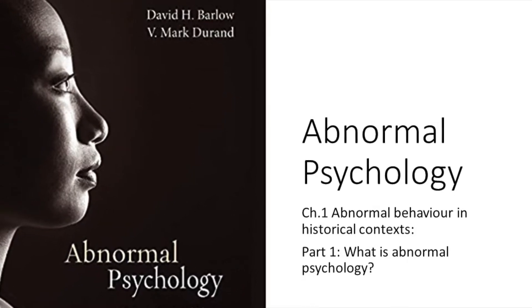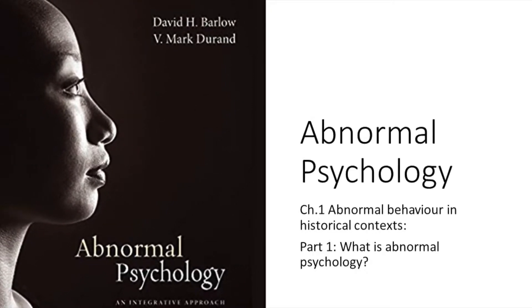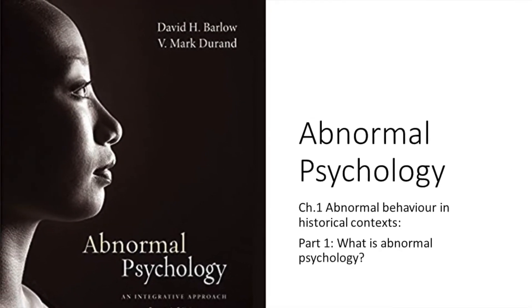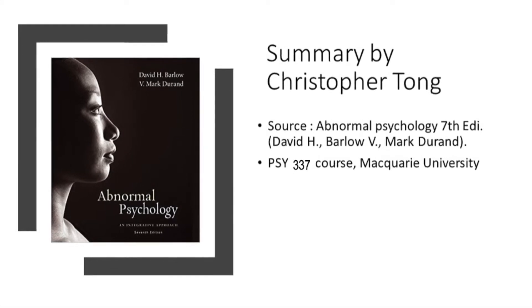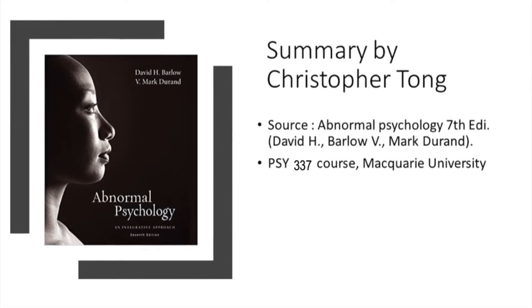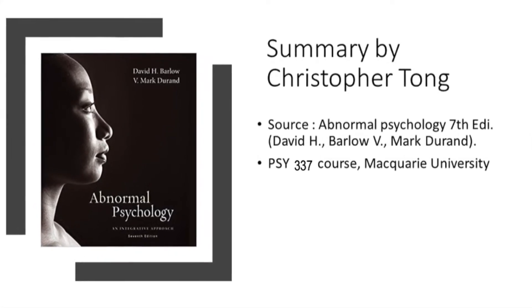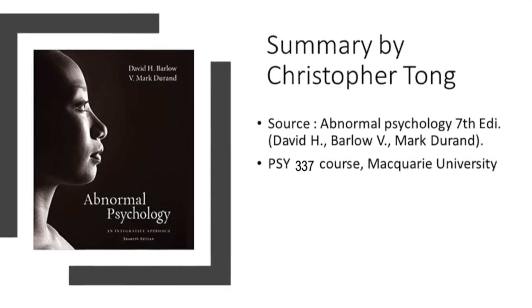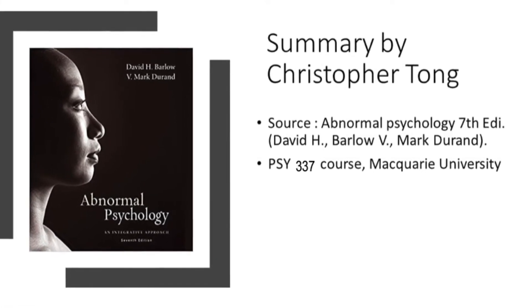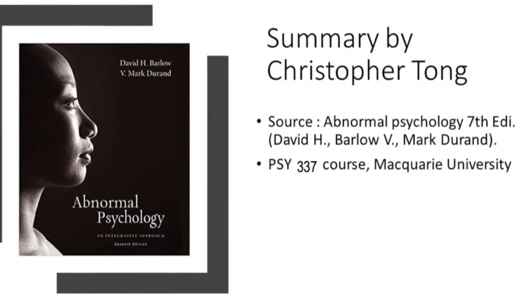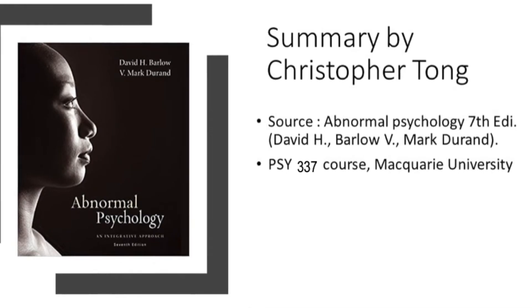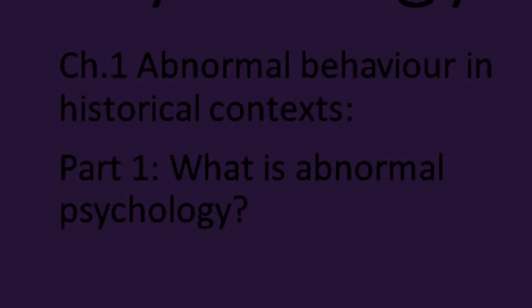This is Abnormal Psychology from the Abnormal Psychology Textbook, 7th Edition, written by David H. Barlow and Mark Duran. This is a summary of the PSY337 course from Macquarie University. Chapter 1: Abnormal Behaviours in Historical Contexts.